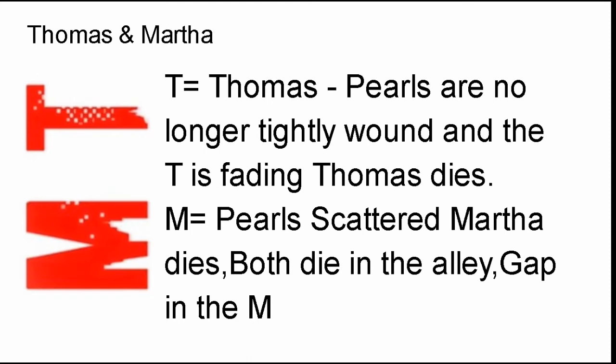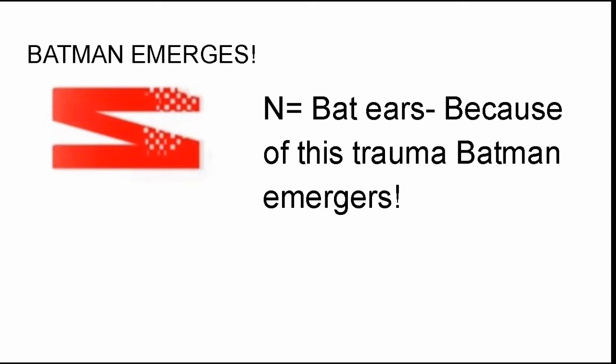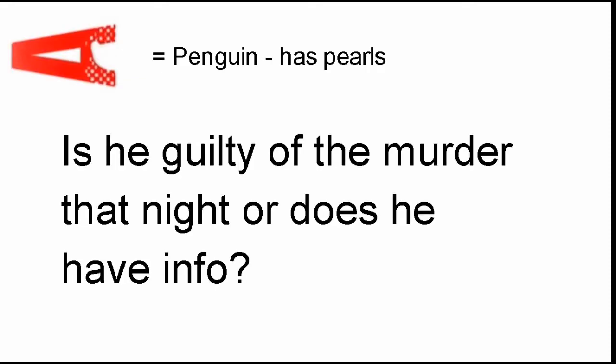Martha and Thomas — we go down to T and M. T equals Thomas, pearls are no longer tightly wound, and the T is fading — Thomas dies. M, pearls scattered — Martha dies. Both die in the alley gap in the M, which also features buildings, and in between looks like an alley. Now Penguin — A — again. Why is Penguin mentioned again? And then we see Batman emerges: N, bat ears. Because of this trauma, Batman emerges. Penguin has pearls. Is he guilty of the murder that night, or does he have info?